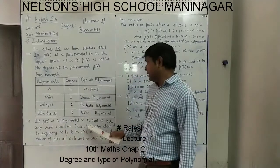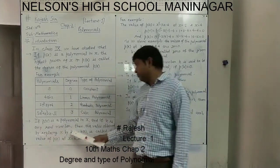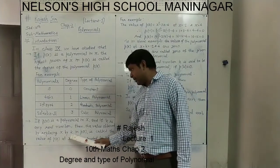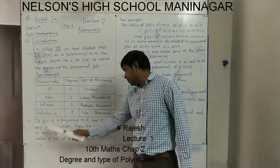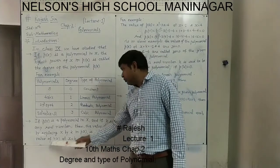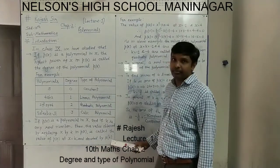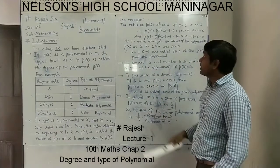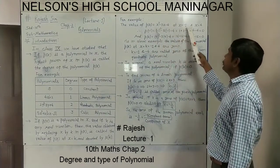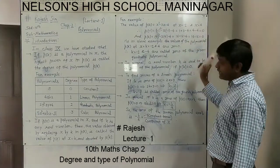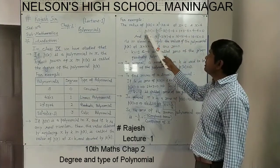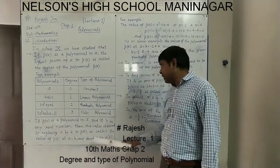Next, if p(x) is a polynomial in x and k is a real number, then the value obtained by replacing x by k in p(x) is called the value of p(x) at x equals k. We denote it as p(k). So at x equal to k, the value of p(x) will be p(k). In an example, we will see how this works.